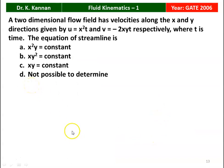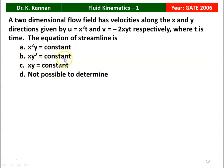Next question, again from the 2006 question paper. A two-dimensional flow field has velocities u = x²t and v = -2xyt, where t is the time. The equation of the stream line is: x²y = constant, xy² = constant, xy = constant, or not possible to determine. The answer is option A: x²y = constant. We will see how in the next slide.